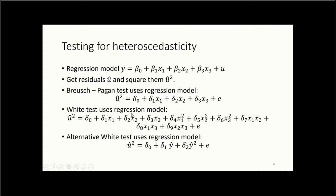The White test also uses squared residuals as the dependent variable, but adds quadratic terms x1², x2², x3², and all interaction terms x1·x2, x1·x3, and x2·x3. This is a more flexible form — we check whether u-squared depends not just on the x terms but also on their squares and interactions. The disadvantage is we now have nine coefficients to test instead of three, which uses more degrees of freedom.